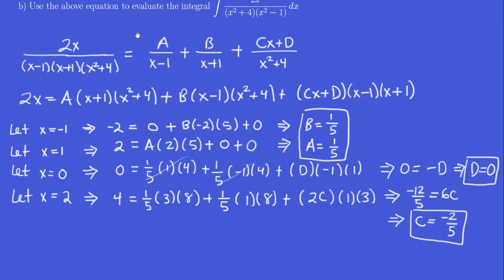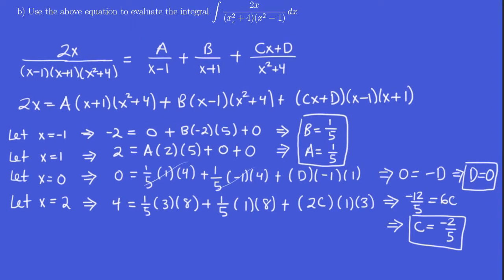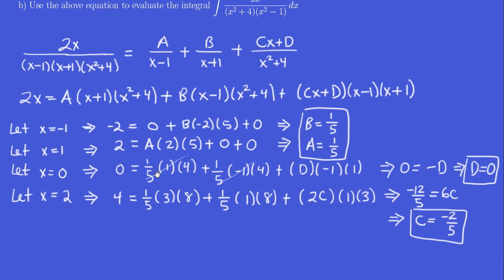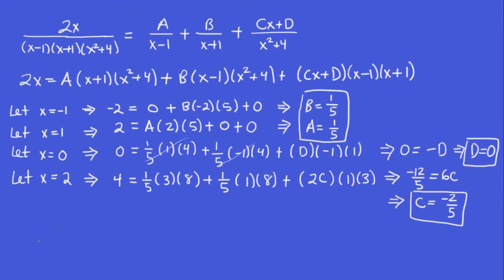Now, the next question, part b here, is going to be easy. We're going to use these constants to evaluate this integral. So let's do the part b right here. The integral of 2x over x squared plus 4 times x squared minus 1.